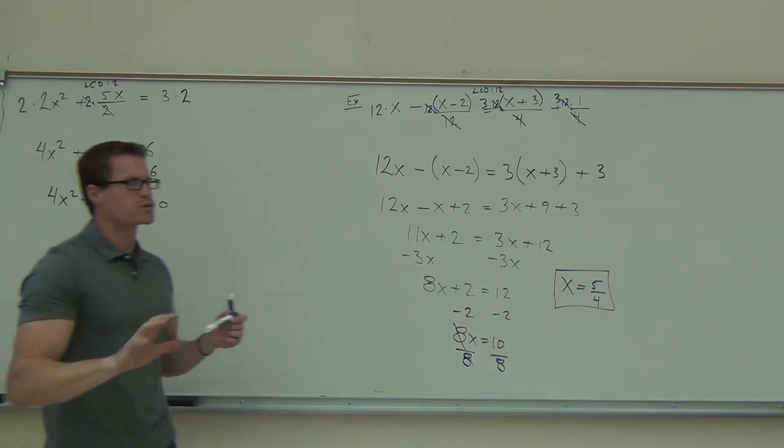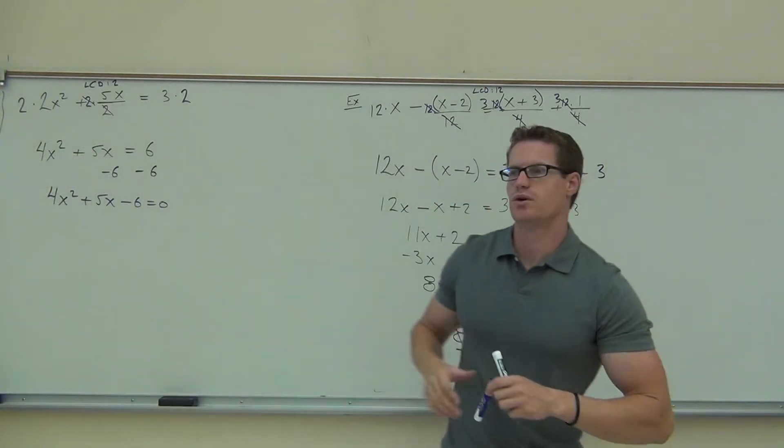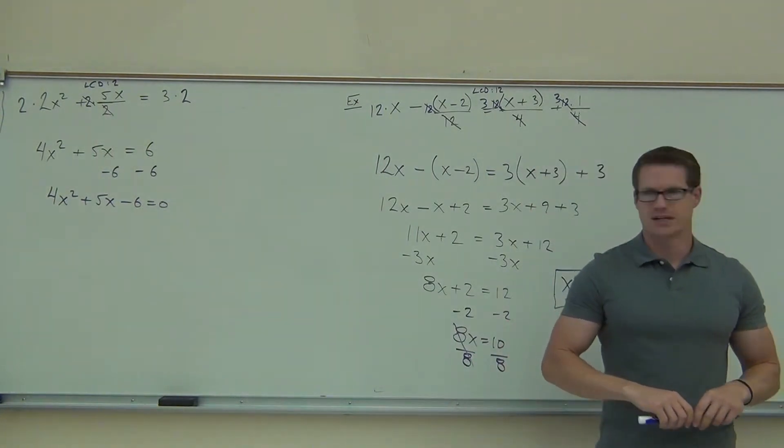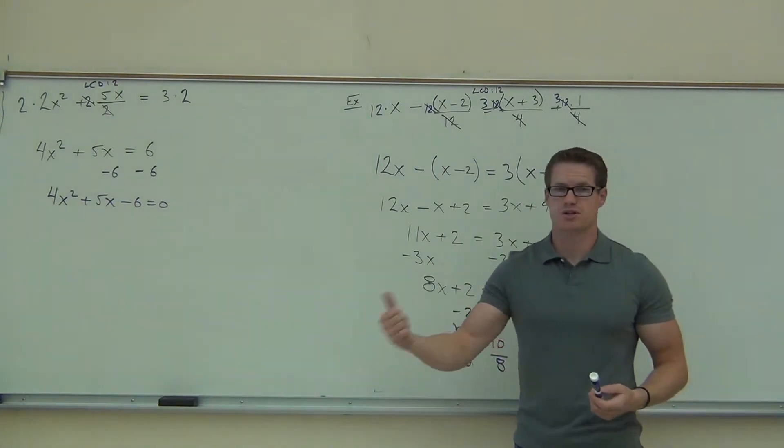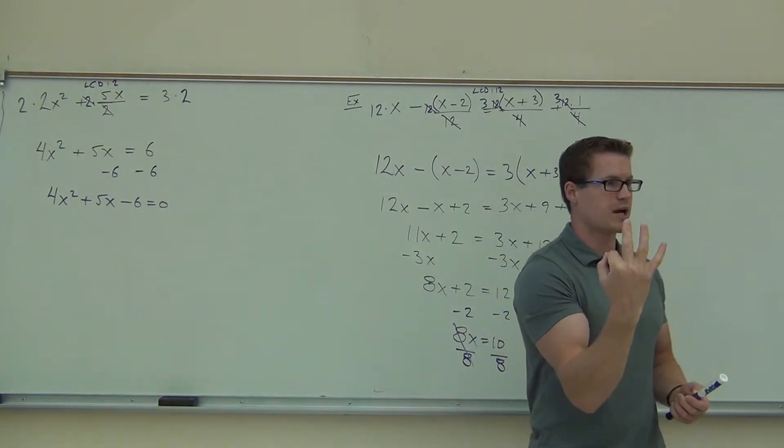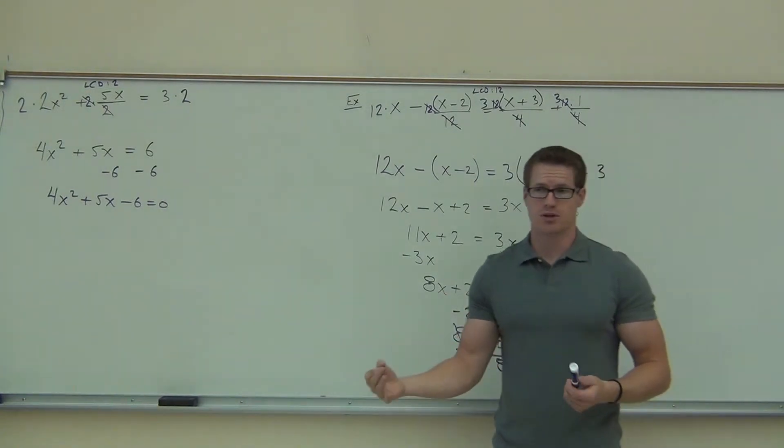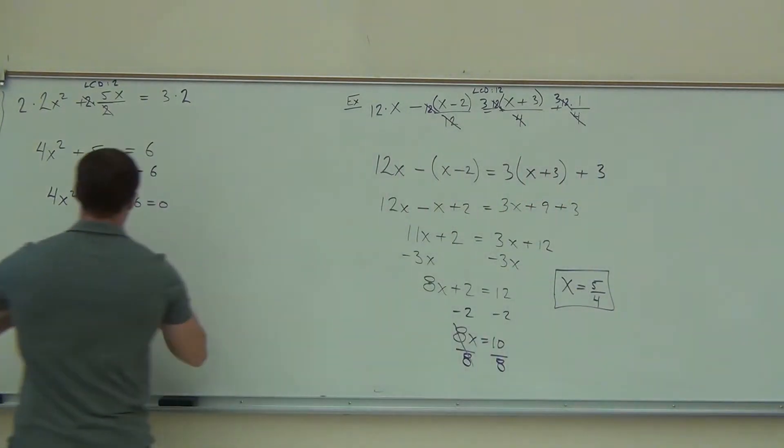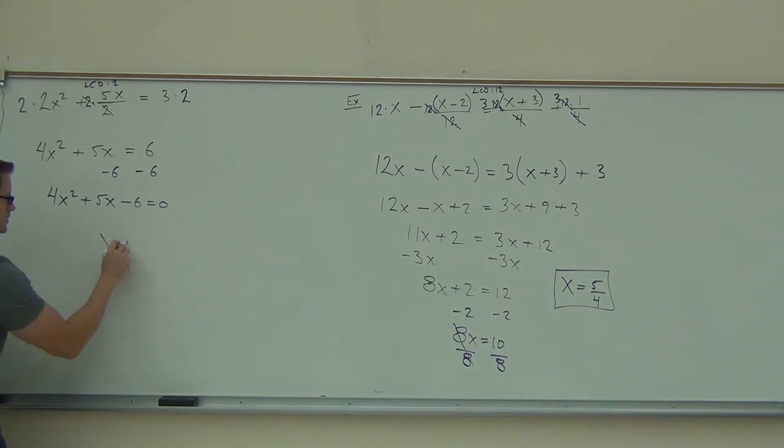Okay, we should be almost pros at this now. What's the next thing we're going to do? Factor. Yeah. Can't be a difference of squares because there's three terms, so we're going to factor by a diamond problem. For the interest of time, we're going to do this together. So on our diamond problem, what goes on the top?